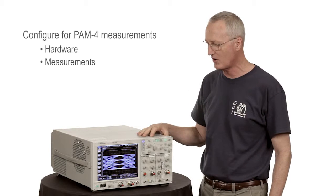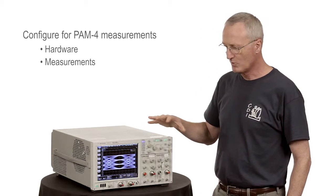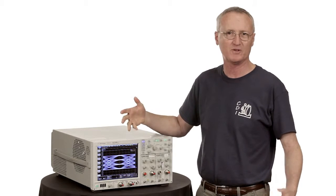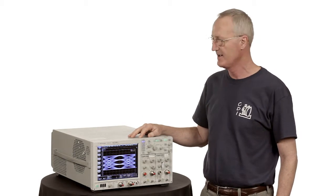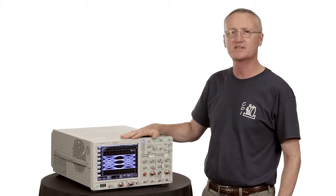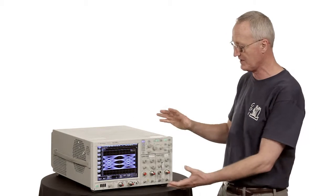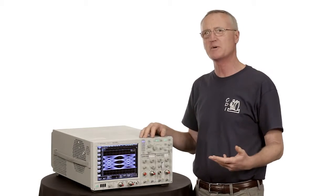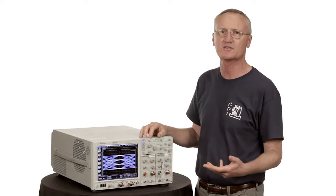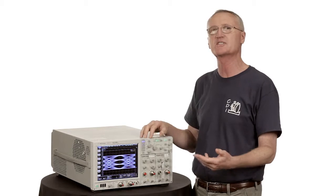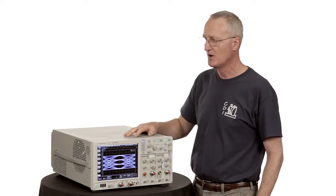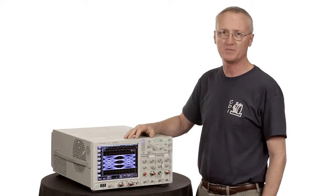So first let's talk about hardware. When we're configuring a scope to make a measurement, we often ask what bandwidth do you need to make a measurement? The DCA is capable of several different bandwidths depending on the plug-in module that you put into the mainframe. We've got plug-ins that do 20 gigahertz, 30 gigahertz, 50 gigahertz, even up to on the order of 80 gigahertz bandwidths. What is going to be appropriate for your PAM-4 measurement?